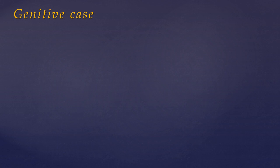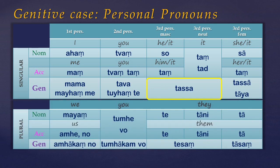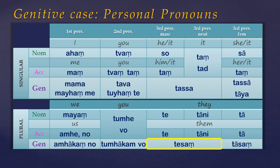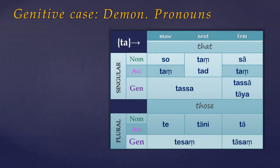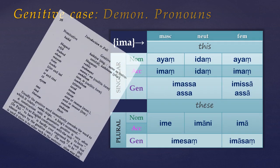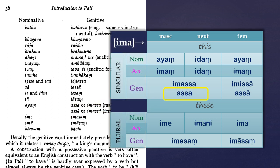Perhaps before we go any further, we need to look at a few more genitive forms. Warder lists a few, but for completeness I'll list most of them here. Looking at the personal pronouns from lesson 5, we can see that 'tassa' is a third person genitive form meaning 'of him' or 'of it,' and in the plural this would be 'tesang.' The third person forms can also be demonstratives — these are from the pronoun stem 'ta,' but there are also other pronoun stems, those based on 'ima.' I think there's a typo on page 56 of Warder's guide — he has the feminine form listed as 'imasa,' and I think it should be 'imissa.'